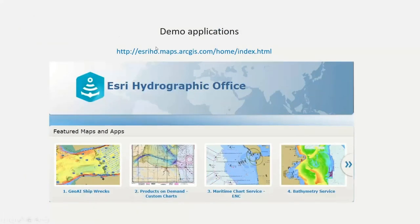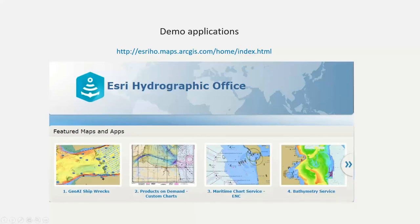This is the website where — no login required — you can see and use the applications I showed in the demo. There's also an app for the GeoAI shipwrecks, which has the bathymetry layer, the existing S57 data, and our output of WRECKS features. There's Products on Demand — the name doesn't officially change to Custom Chart Builder until 10.9. There's the straight Maritime Chart Service, bathymetric services, and many other applications. I encourage you to go to this page and check out these applications.